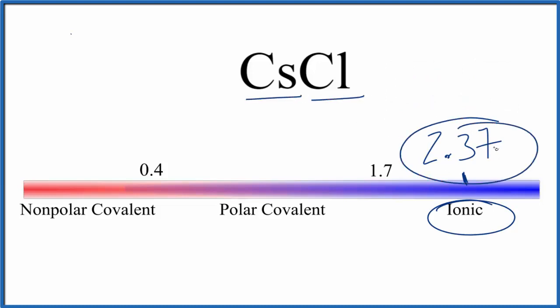This is Dr. B answering the question whether cesium chloride is ionic or covalent. It is an ionic compound, a little bit of covalent character, but we would classify it as ionic. Thanks for watching.